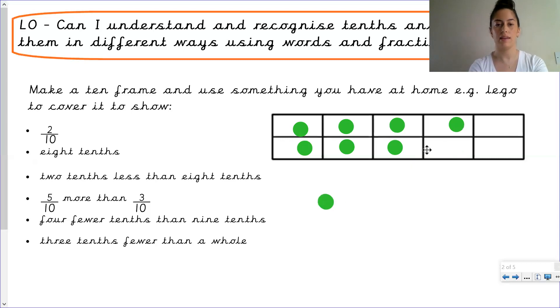Okay the next one you need to have a think. Two tenths less than eight tenths. Which one do you think we need to start from? It says two tenths less than eight tenths. So which one do we need to start from? So we need to start from the bigger number eight tenths and then we need to subtract two tenths or take away two tenths. So let's start with eight tenths.